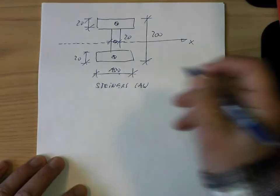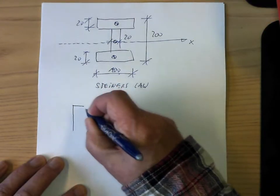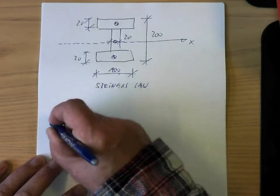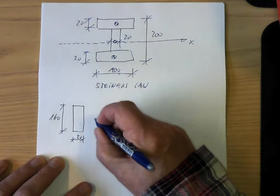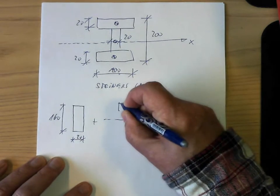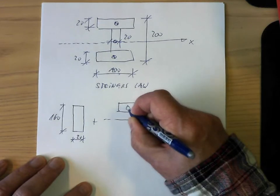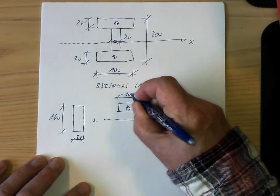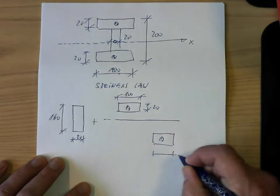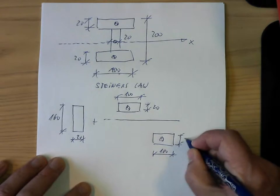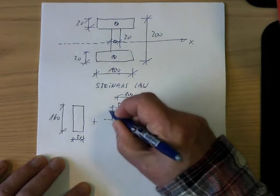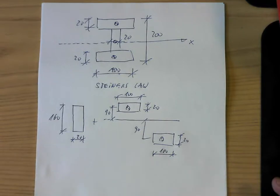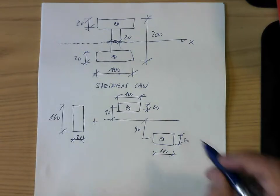Our calculation consists of an inner rectangle of 20 by 160 whose center of gravity lies on the neutral axis, plus two flange elements each 100 by 20, which have their center of gravity offset from the neutral axis. Looking at the center of gravity of these flange elements, the offset from the neutral axis to each flange centroid is 90. Since their center of gravity is not on the axis of interest, we must apply Steiner's law.